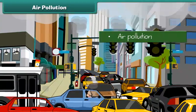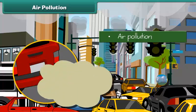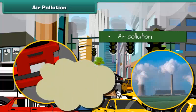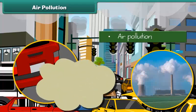Air gets polluted when unwanted substances, called air pollutants, enter into it. The question is, how do these substances enter the air? Air pollutants come due to burning of fuels and emission of poisonous gases from industries.